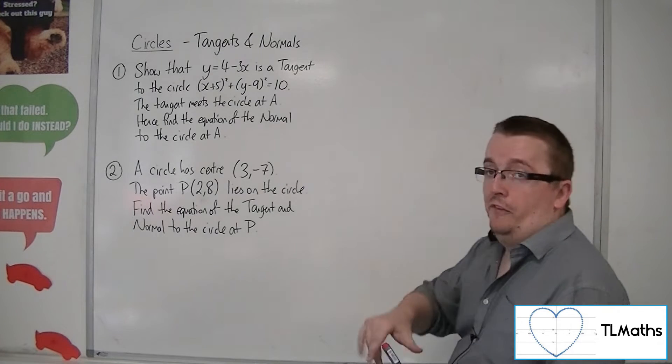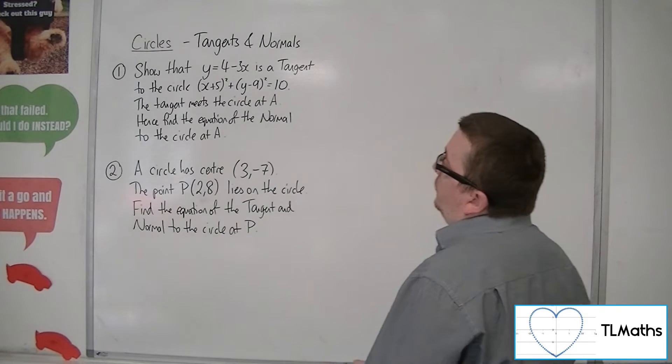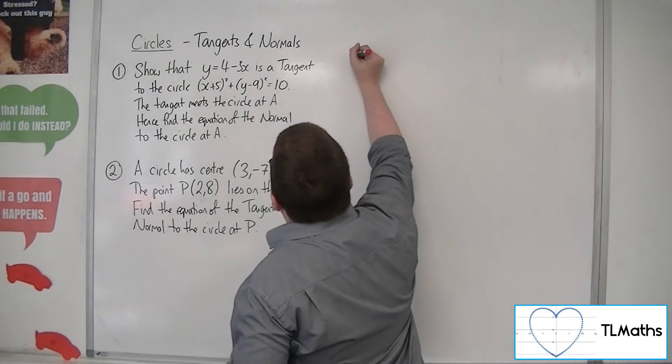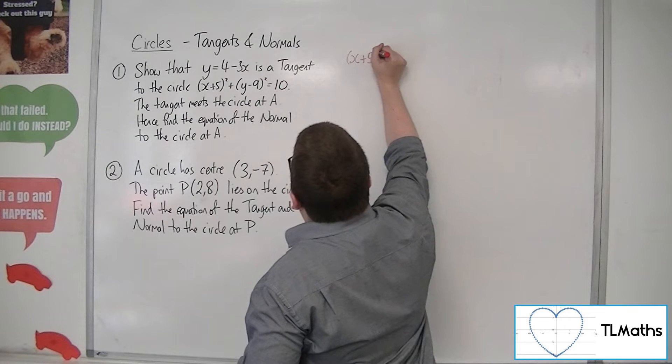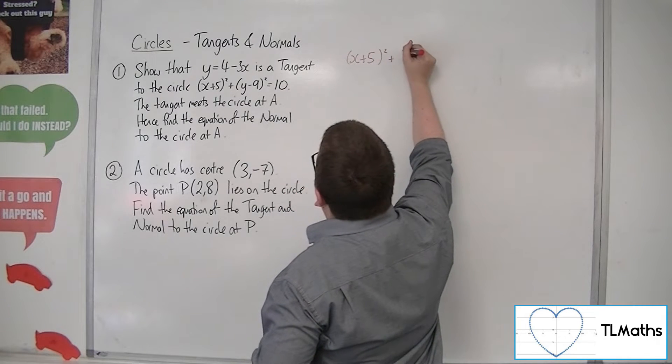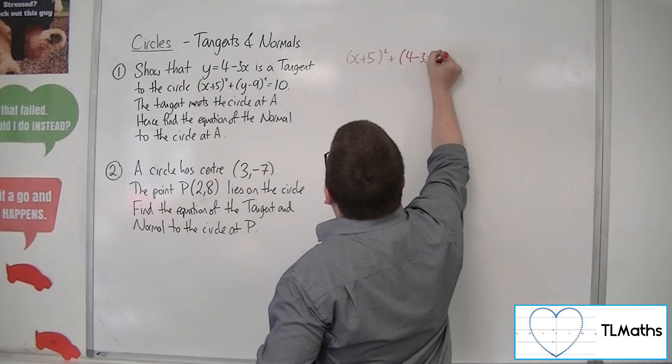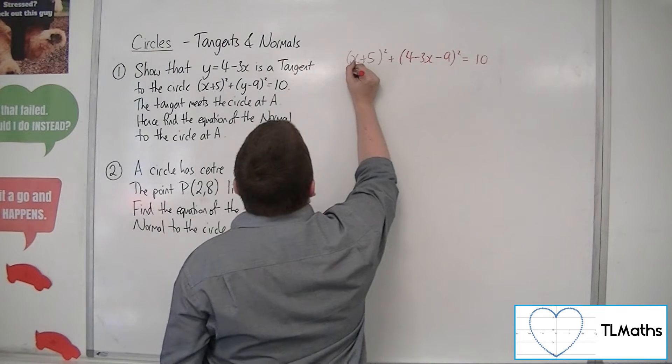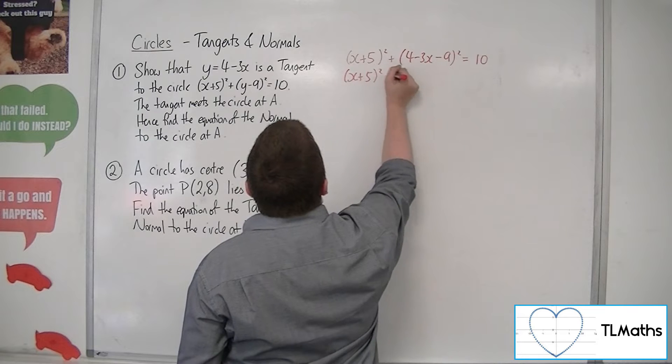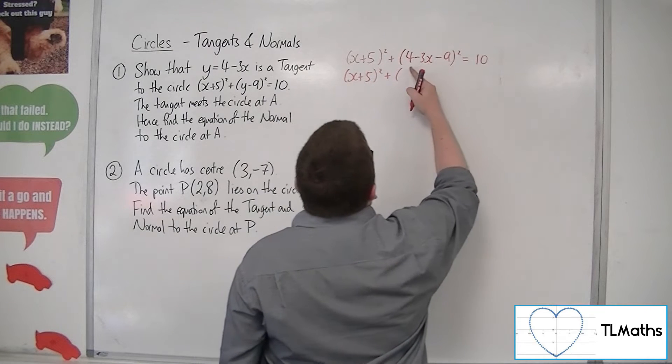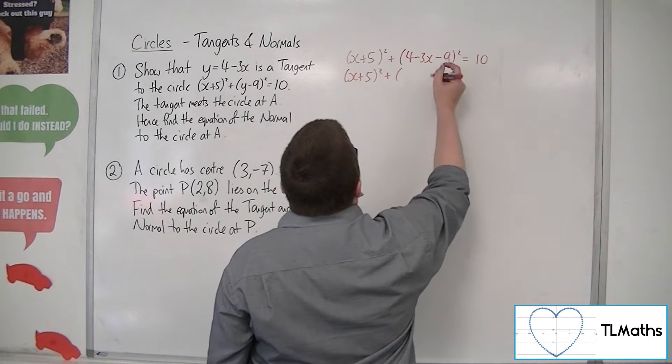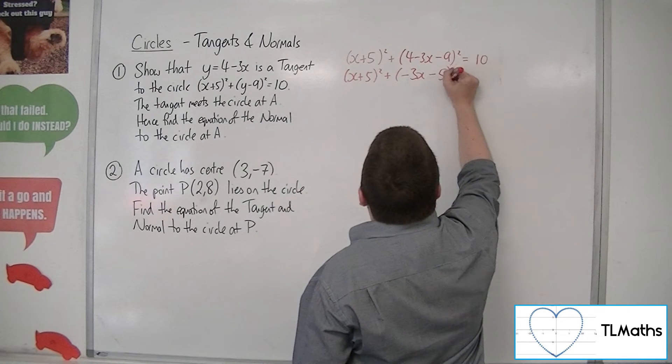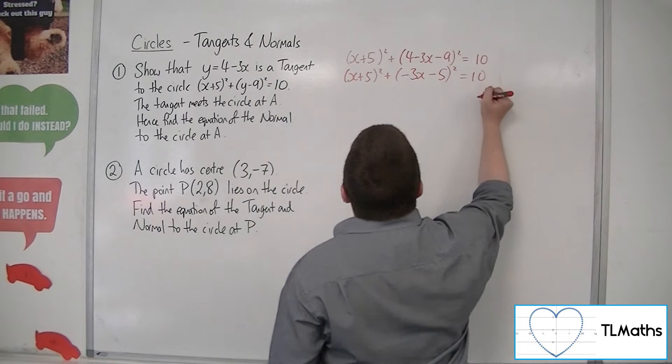So we're going to do that bit first. What we do is substitute the equation of the tangent into the circle. So we get x plus 5 squared plus 4 minus 3x minus 9 squared equals 10. So let's tidy that up. x plus 5 squared plus, what have we got here, 4 take away 9. So let's leave the minus 3x at the front and then have minus 5 squared like that equals 10.